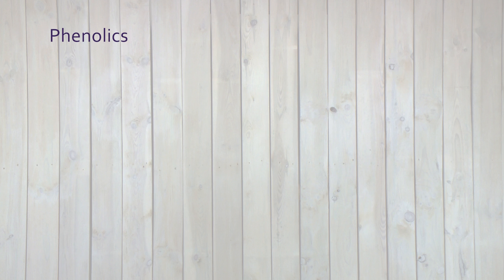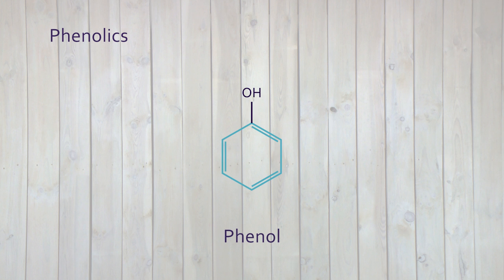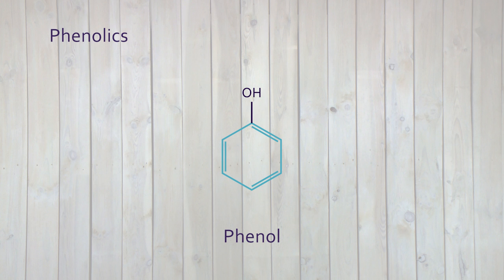Another group of natural compounds that we encounter every day are phenolics, with phenyl as its basic building block. Phenyl is a benzene ring with a hydroxyl group attached. When more hydroxyl groups are attached it is called a polyphenol, such as gallic acid.